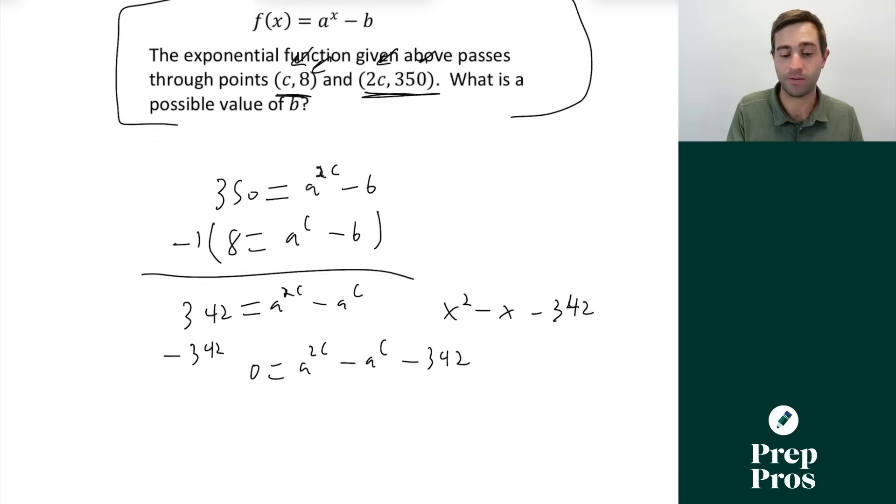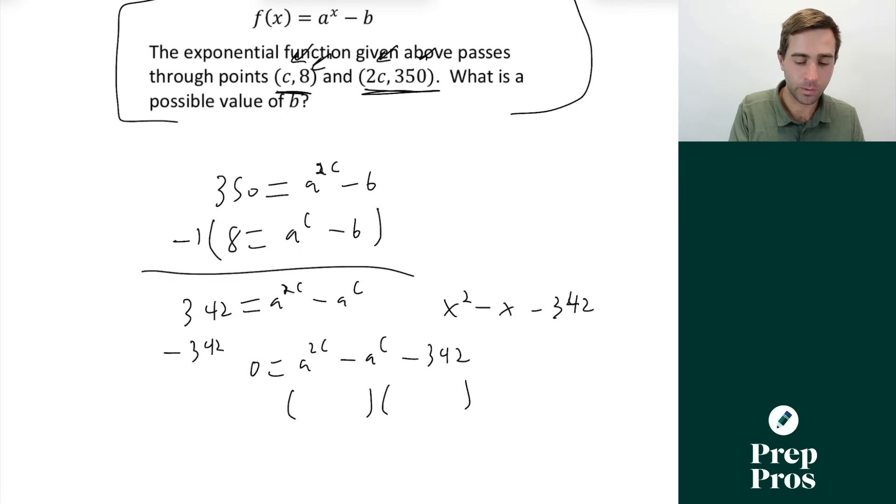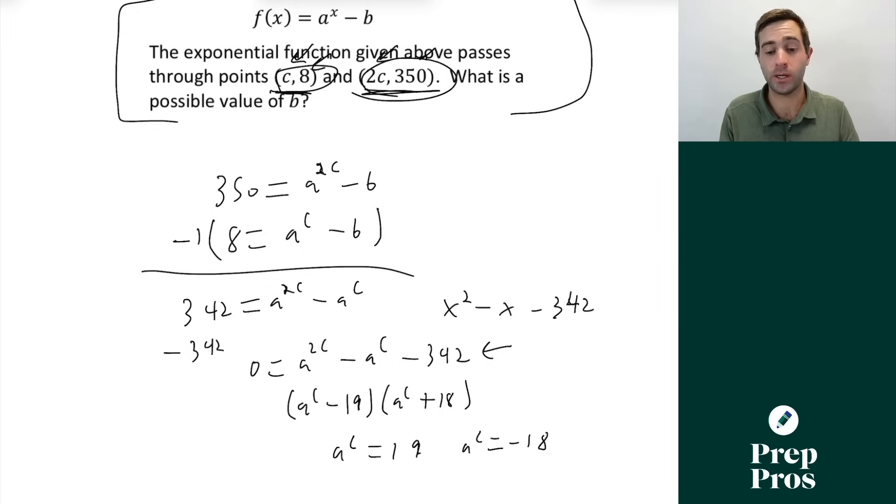Well the way we would factor this is we would get a to the c minus 19 and a to the c plus 18. Those are going to foil back to give us this. So therefore a to the c is equal to 19 or a to the c is equal to negative 18 here. Well what we can see from the behavior of this is this is an increasing exponential function from c we get 8 to c we get 350 so it has to be positive. Well from here we're basically home free. We know a to the c equals 19 so we can just plug that back in in this expression. So we'll get 8 equals 19 minus b and that will give us that b equals 11 and that's going to give us our correct answer. If you want more practice with nine other really challenging questions like this you can check out those in the free trial of my ultimate SAT course. If you want 150 plus expert level questions like this check out my advanced math course.